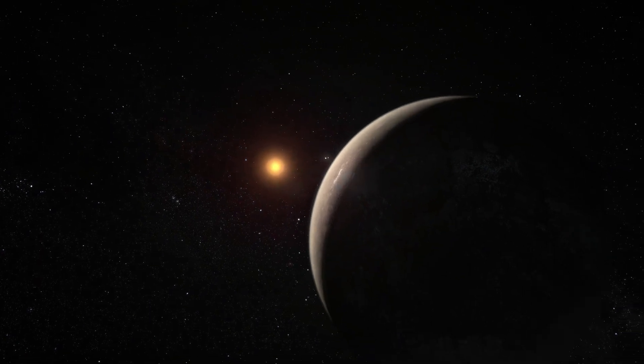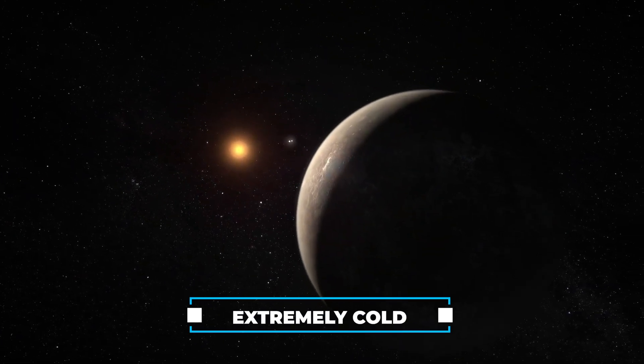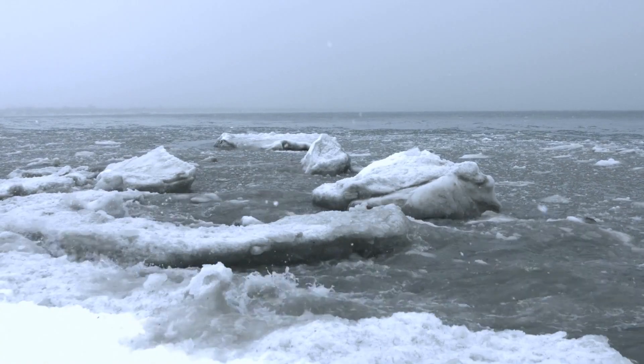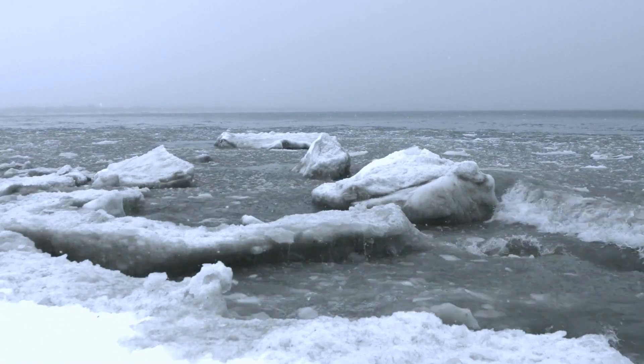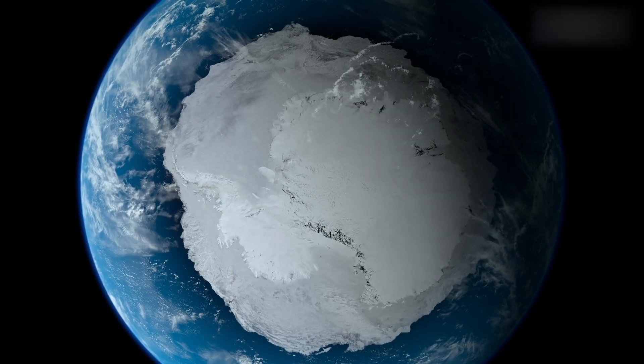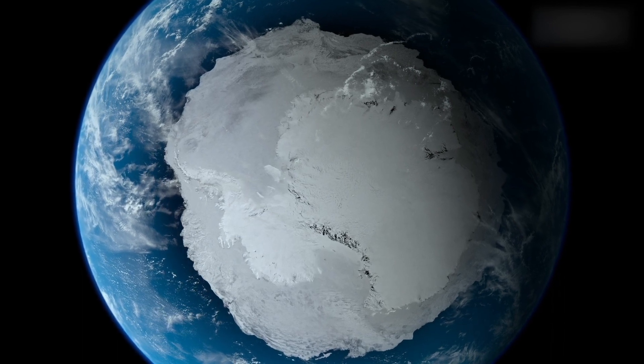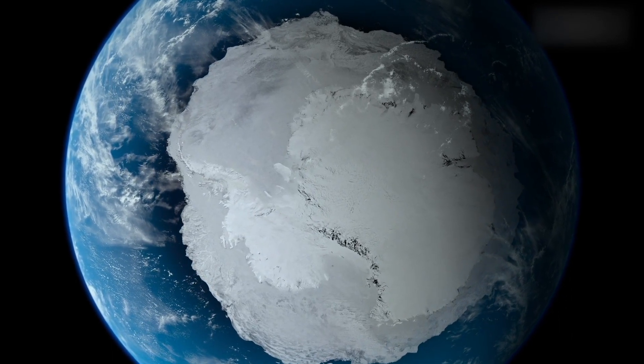On the other hand, if a planet is too far from its star, it gets extremely cold. The low temperatures cause the water to freeze, turning it into ice. Again, this is a challenge because life as we know it can't thrive in these freezing conditions.